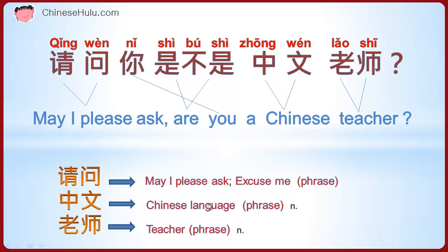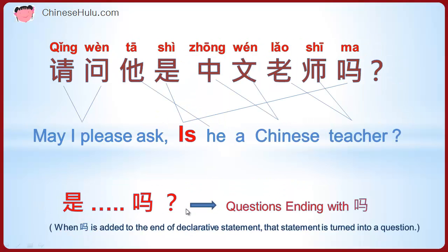中文 means Chinese language — that's also a phrase, two words put together. 老师 means teacher — also a phrase, two words together. So 中文老师 means Chinese teacher. For example, 你学中文 — 学 means learn — you learn Chinese language.